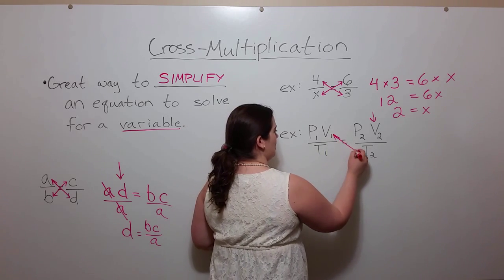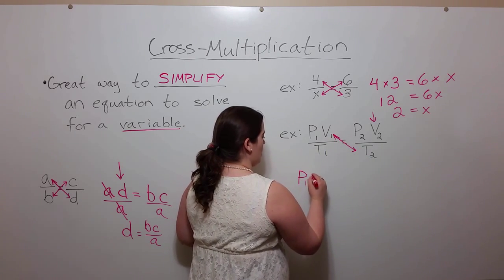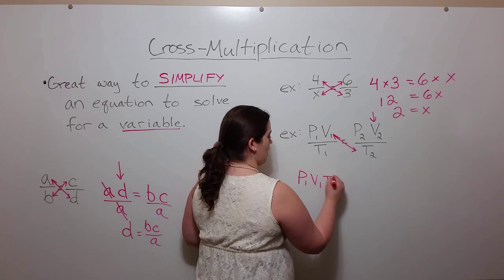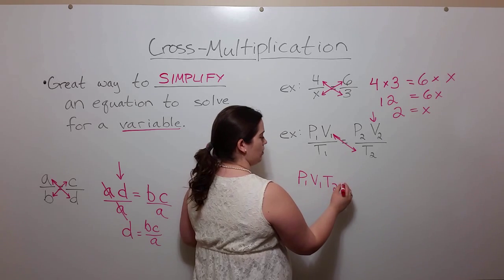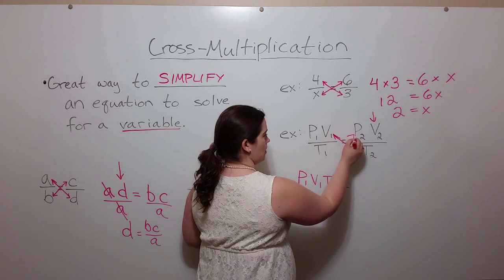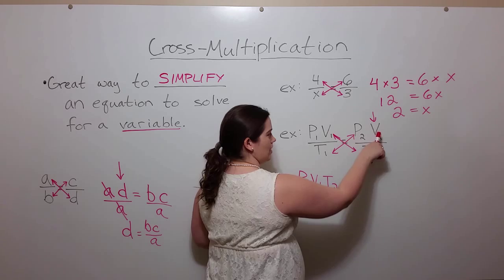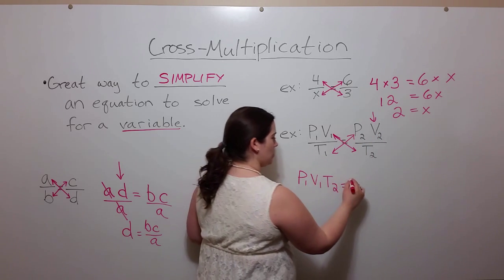Multiply these corners, P1 times V1 times T2, so that's P1 times V1 times T2 equals the other corners, P2 times V2 times T1.